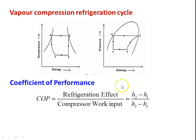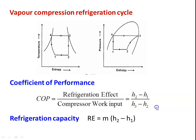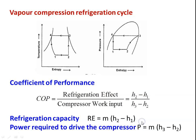The coefficient of performance is defined as refrigeration effect divided by the compressor work input. Refrigeration effect is the enthalpy difference across the evaporator; compressor work input is the enthalpy difference across the compressor. So COP = (H2 - H1) / (H3 - H2). Refrigeration capacity Re = M × enthalpy difference across the evaporator. Power required to drive the compressor P = M × enthalpy difference across the compressor.